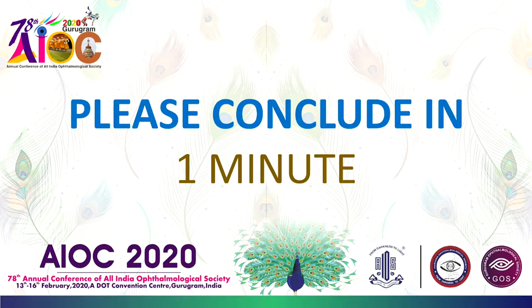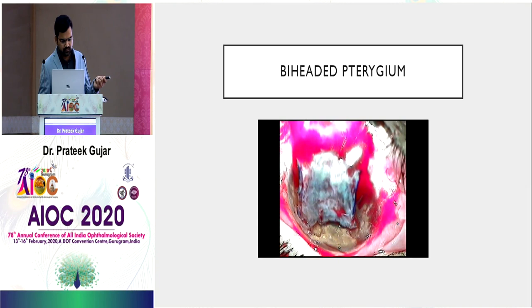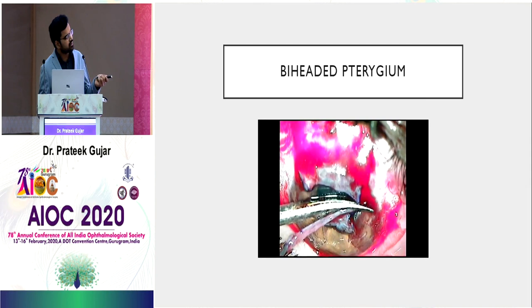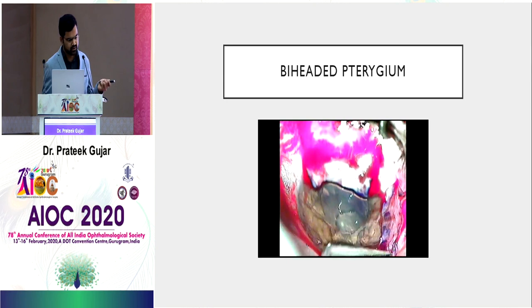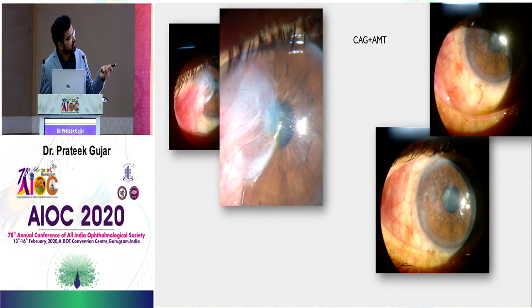For a double-headed pterygium, the dissection remains the same. Reflect one conjunctival part and split the graft in two halves — one half at each end — then secure with fibrin glue or sutures. For very large fleshy pterygium almost like symblepharon, you can do conjunctival autograft plus amniotic membrane transplantation to cover the remaining area.